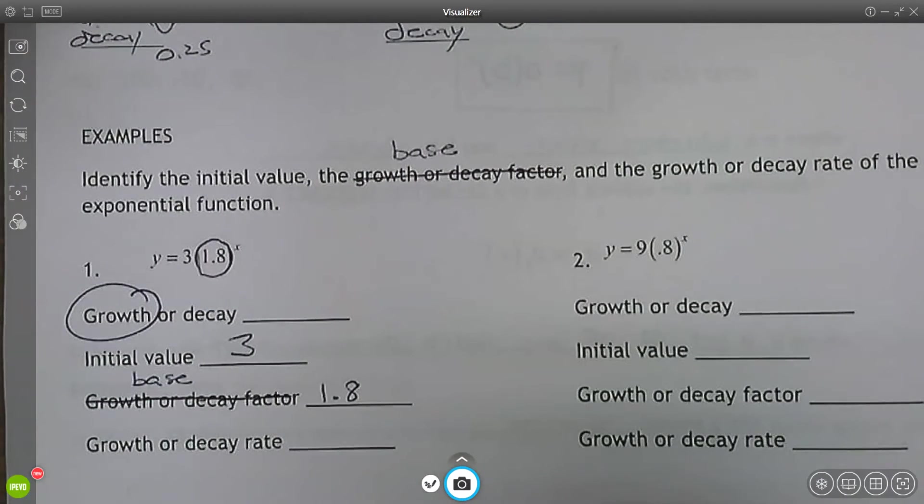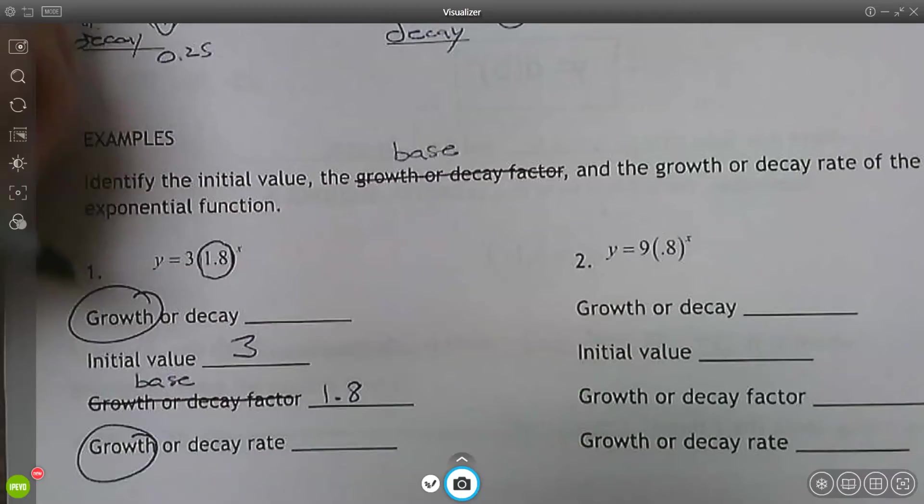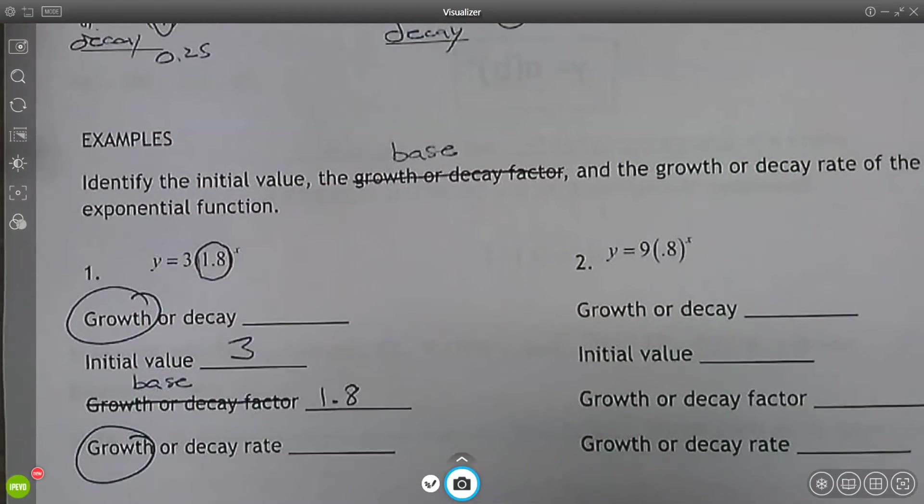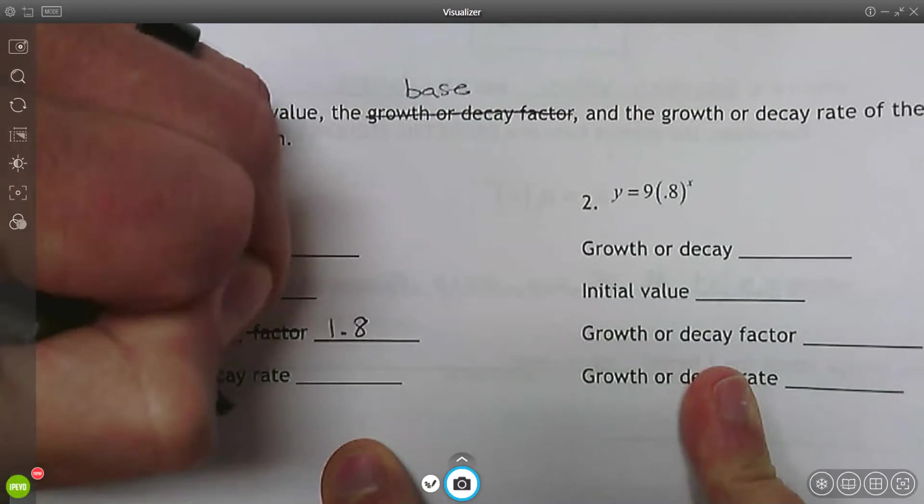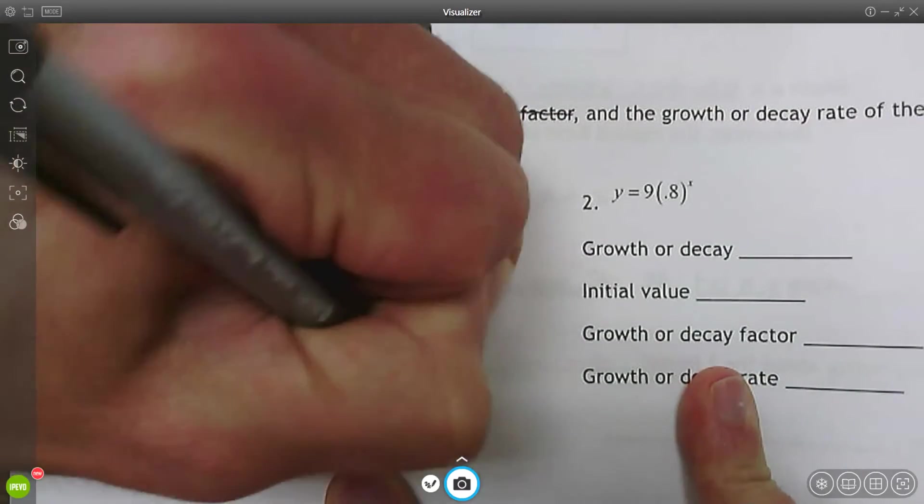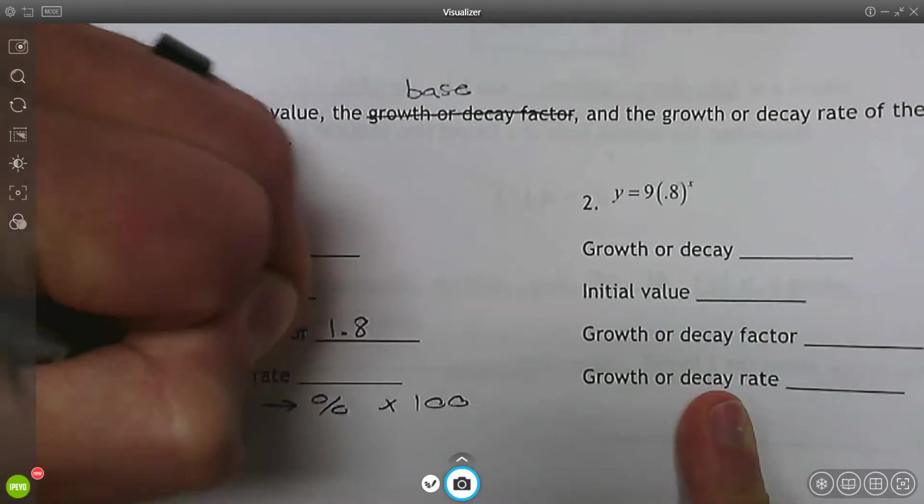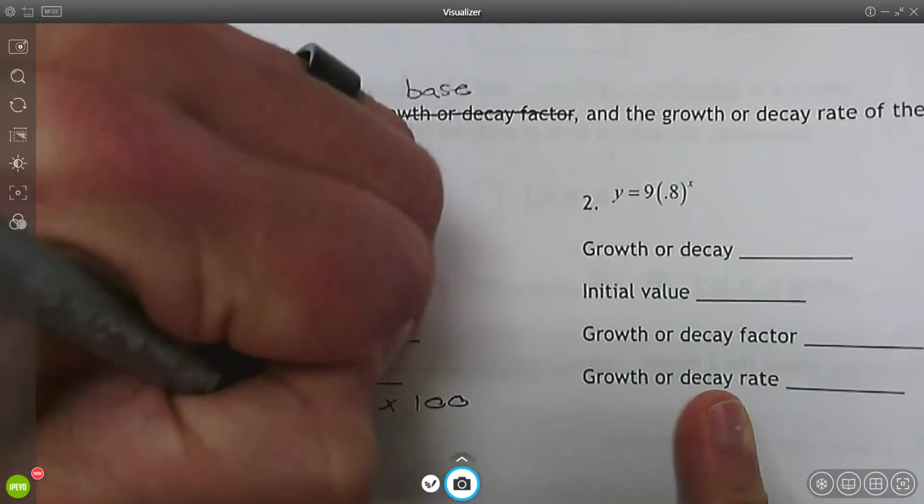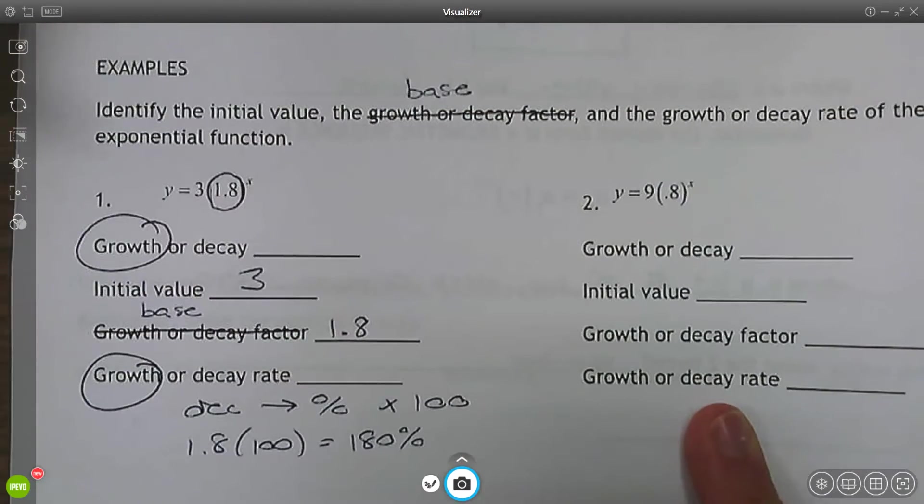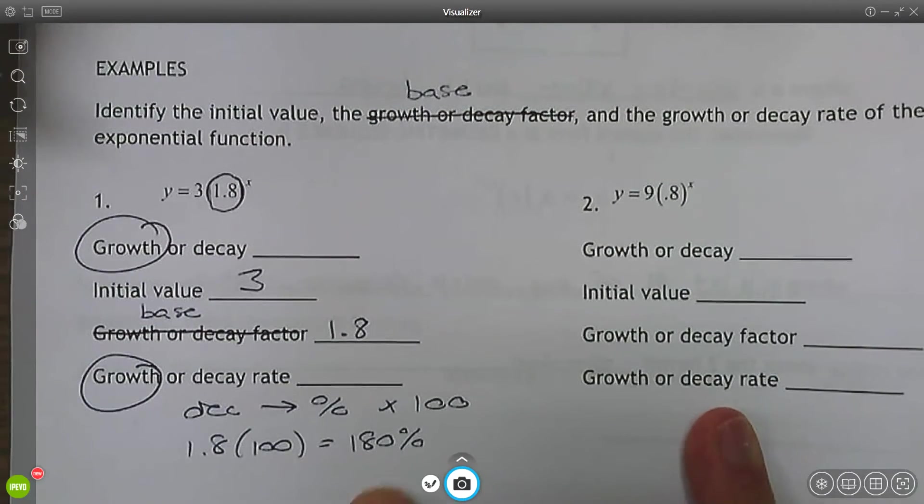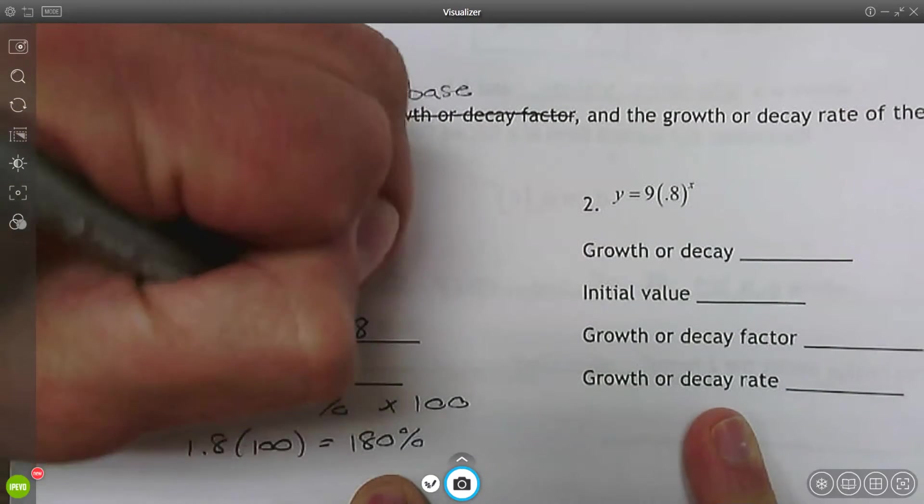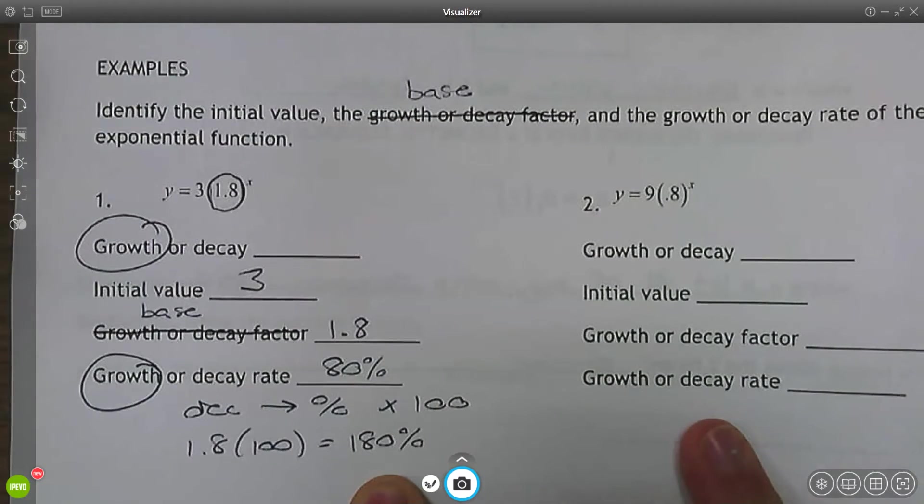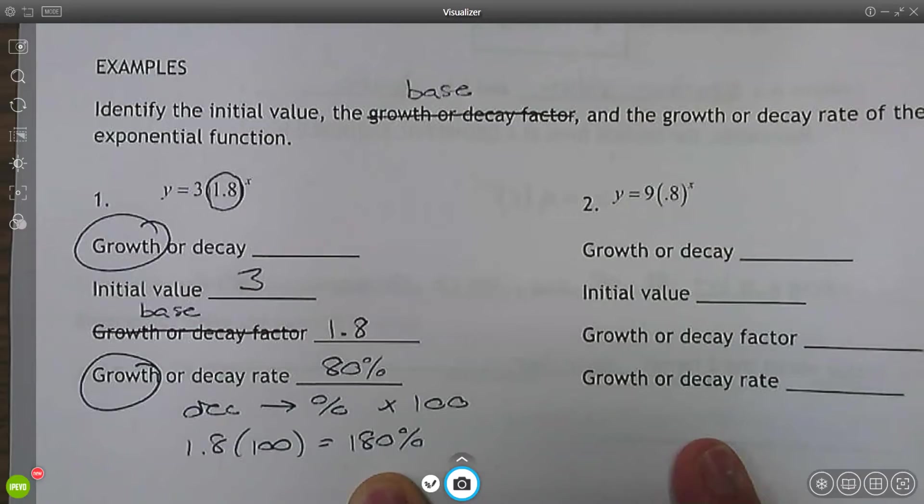Now to find the factor of growth or decay, in this case, it's growth. What I'm going to do is I'm going to convert this decimal to a percent. So if I want to go from a decimal to a percent, I'm going to multiply by 100. So 1.8 times 100 is 180%. We're always starting at 100%.